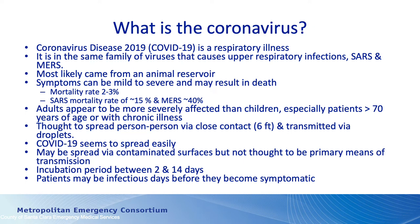COVID-19 is a respiratory illness in the same family of viruses that causes mild upper respiratory infections, but also the same family that causes SARS and MERS. Most likely this disease came from an animal reservoir, though that's yet to be fully proven. Symptoms can be very mild or severe and result in death. The current mortality rate is two to three percent. By comparison, SARS has a mortality rate of about 15 percent and MERS — the Middle East Respiratory Syndrome virus — has a mortality rate of around 40 percent. Some of these coronaviruses have fatality rates up to 40 percent, so we have to be conservative in how we approach this disease.